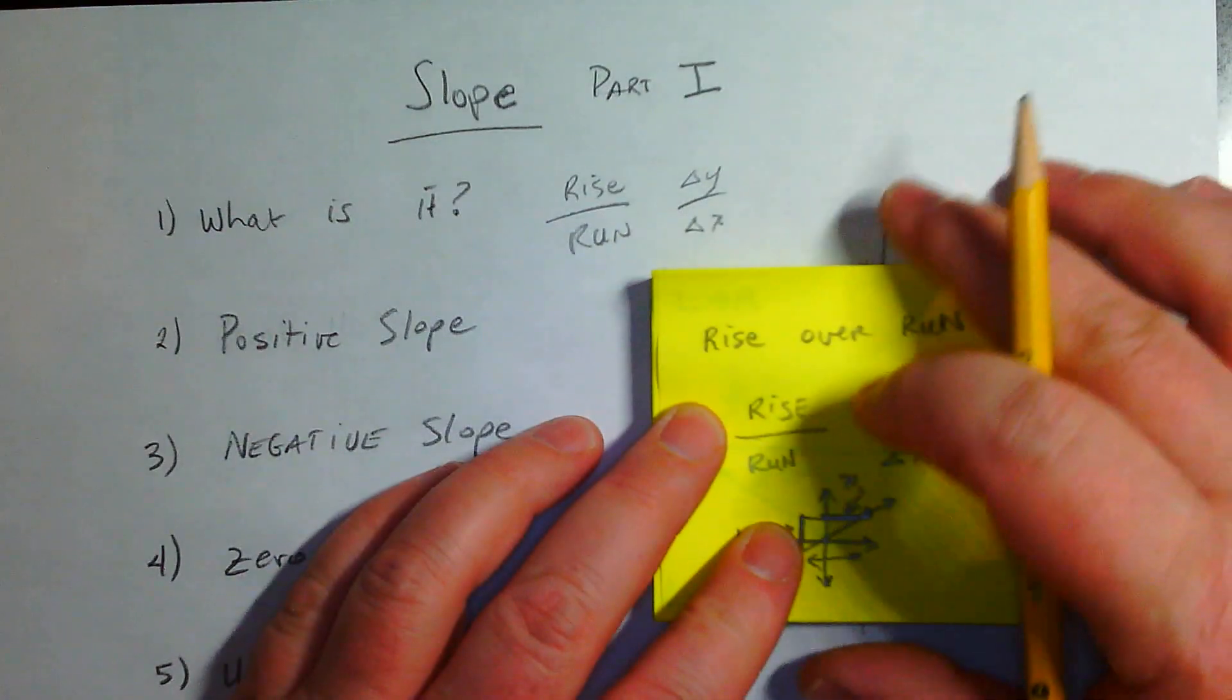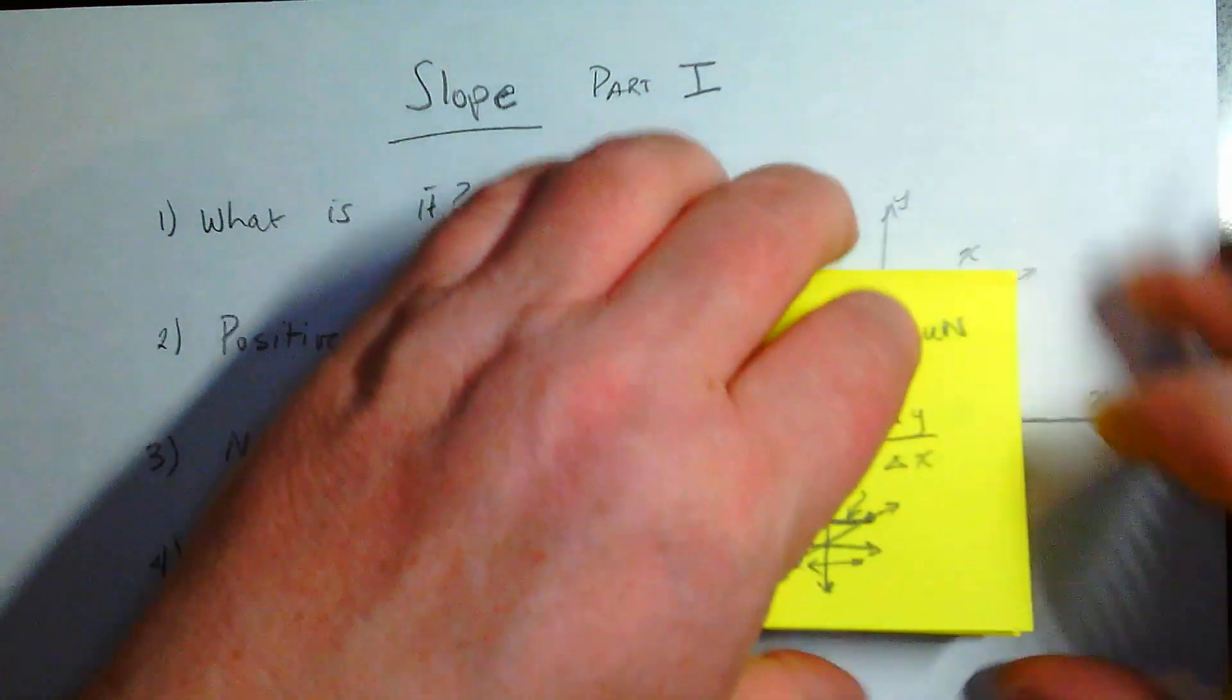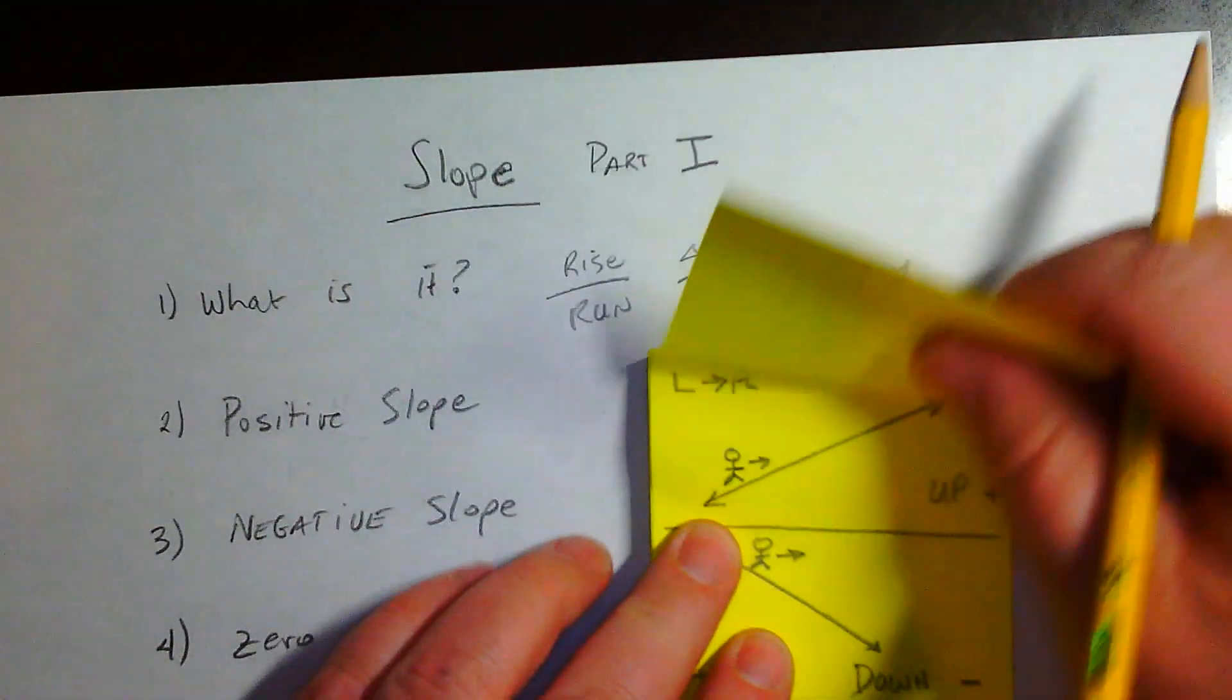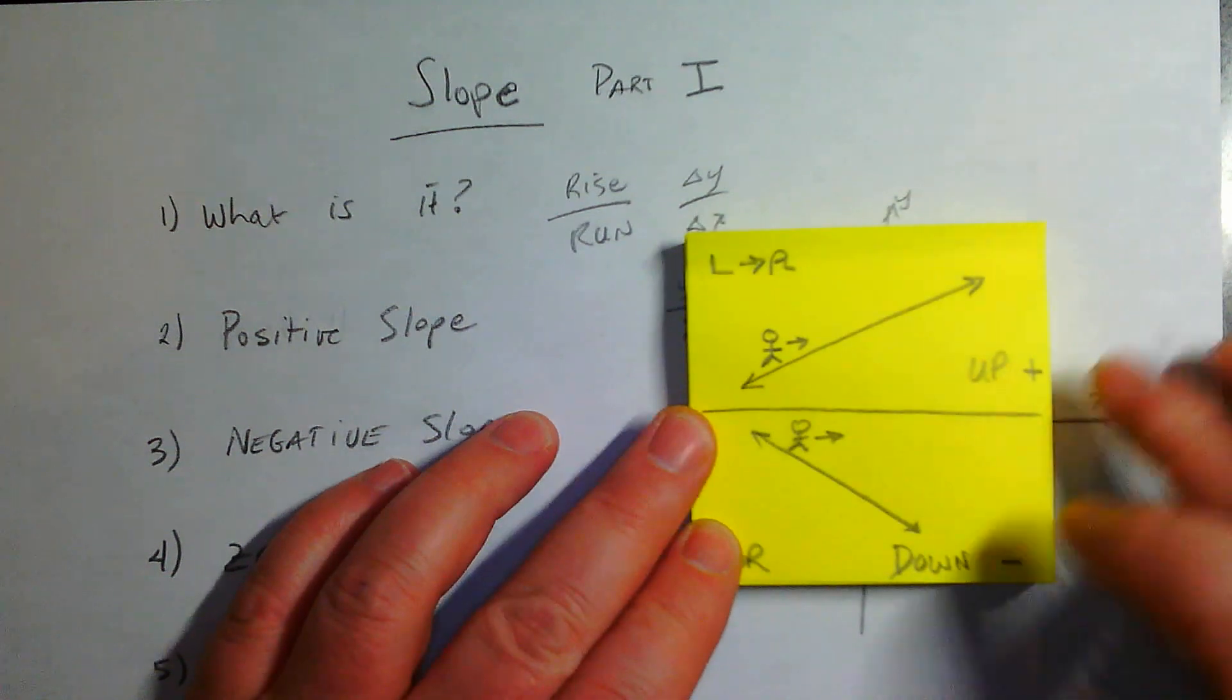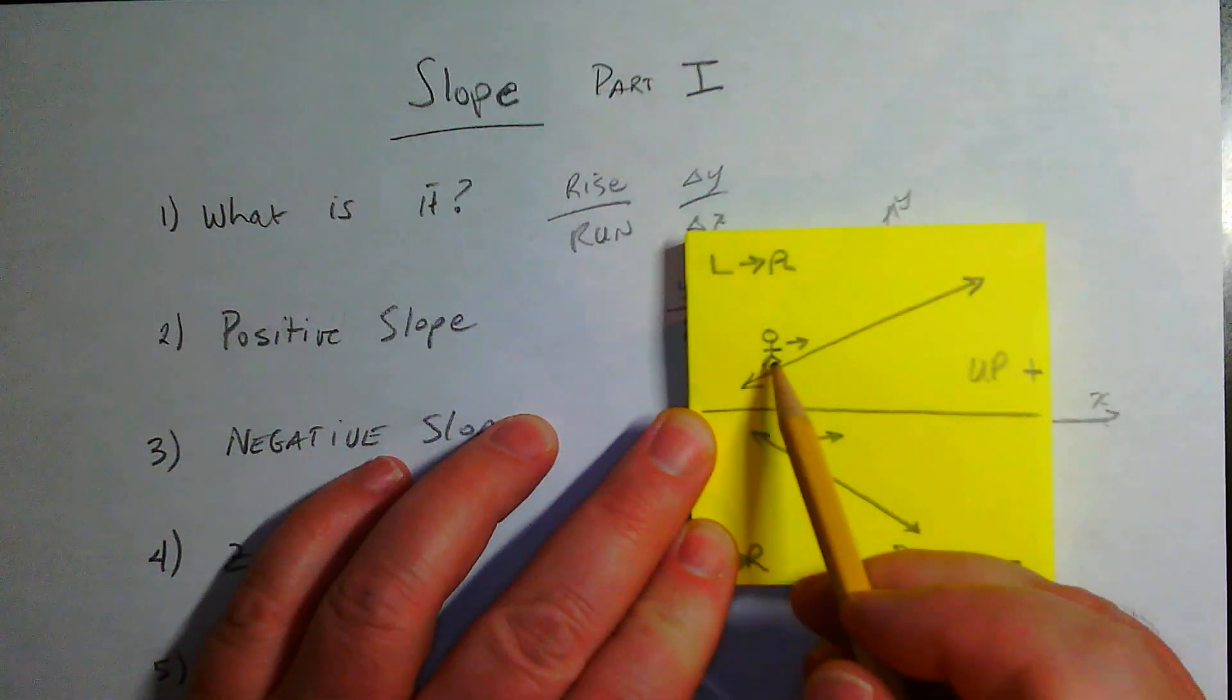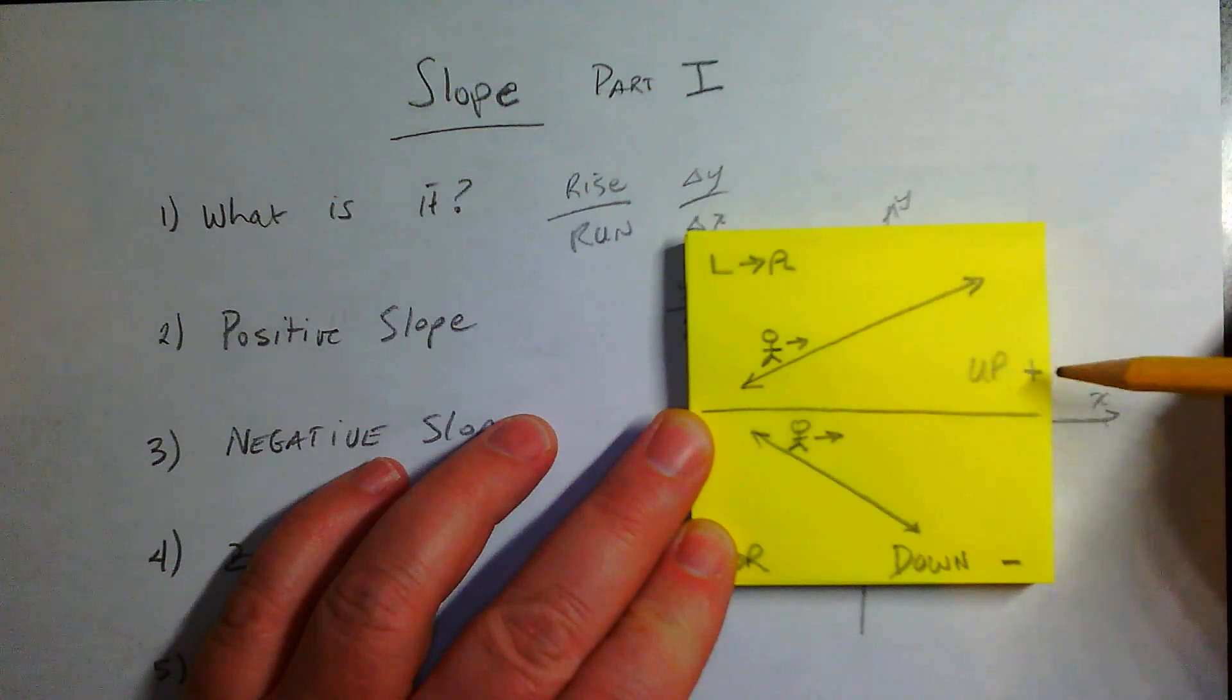The way you read a slope is from left to right. If you want to see if it's positive or negative, that's how you read it. Imagine you're standing on the left and going to the right. If you're going up, it's a positive slope.